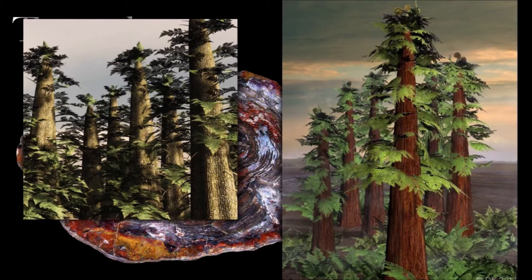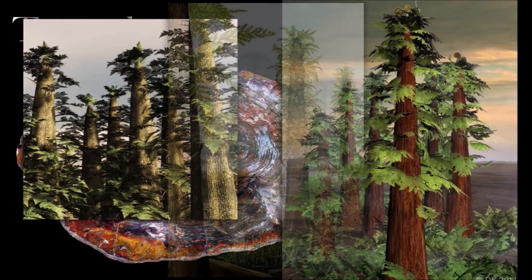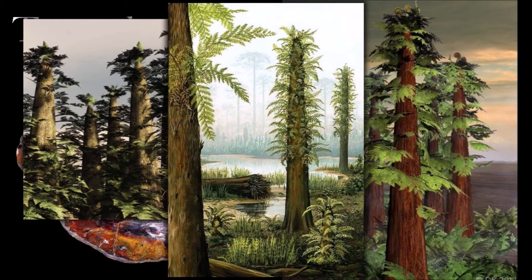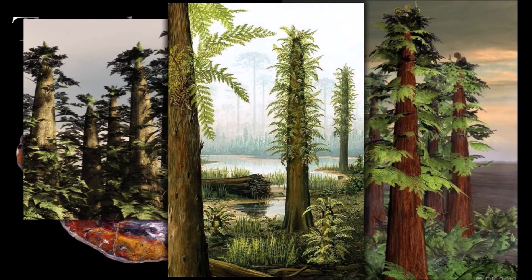Although no leaves have been found attached, the fossilized leaf bases show that they were produced from the sides of the stems, so the upper part of the trunk would have been covered with leaves, rather than having a single crown of leaves on top as in other forms of tree ferns.